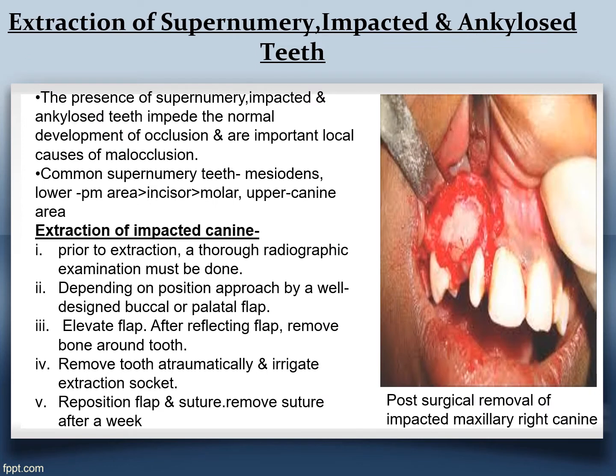Regarding extraction of supernumerary, impacted, and ankylosed teeth: the presence of such teeth impedes the normal development of occlusion and is considered one of the most important local factors of malocclusion. The common supernumerary teeth seen are the mesiodens, lower premolars, incisors, molars, and in the upper arch mostly in the canine area.